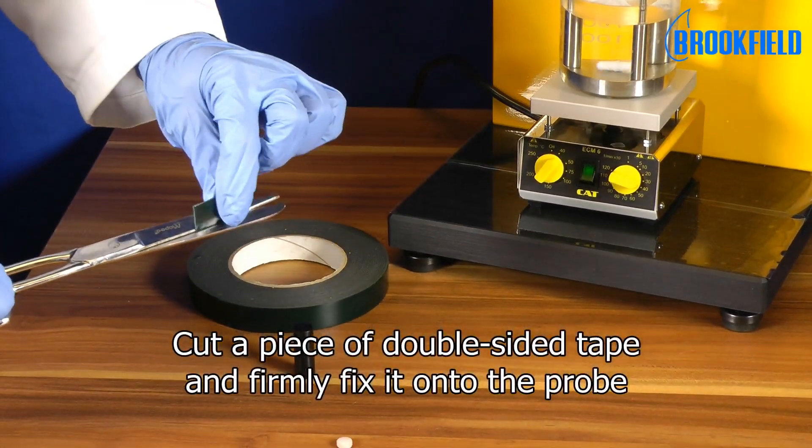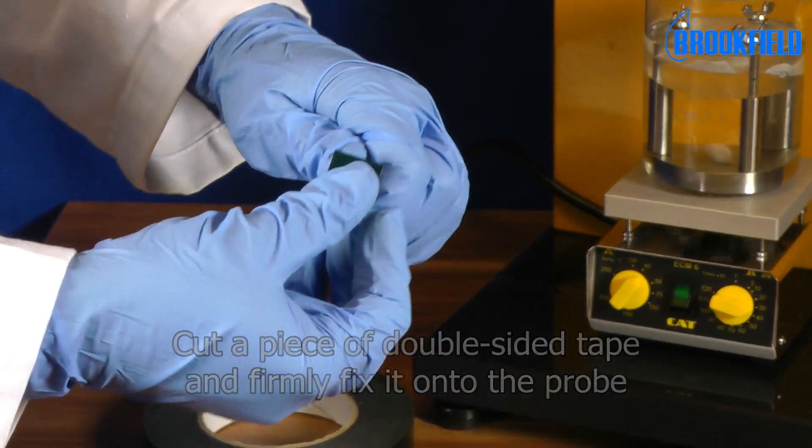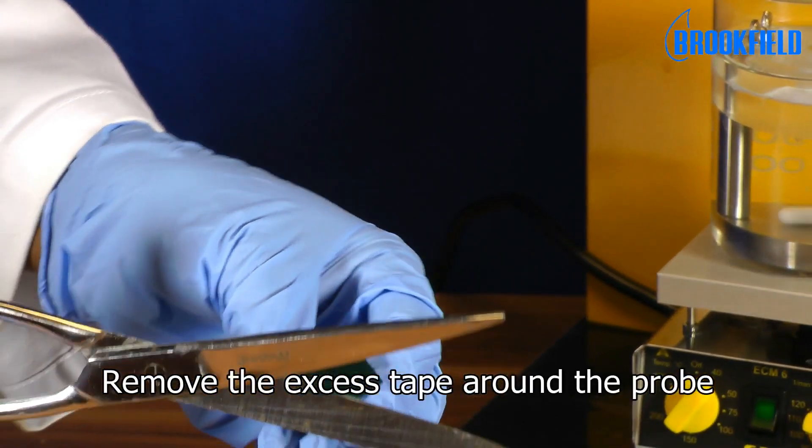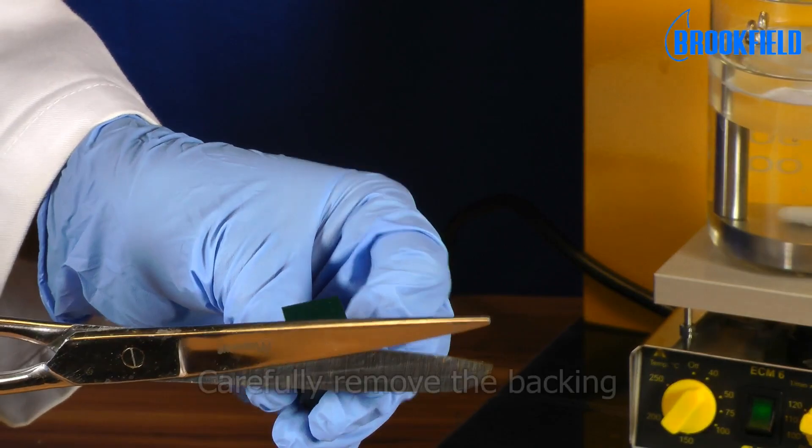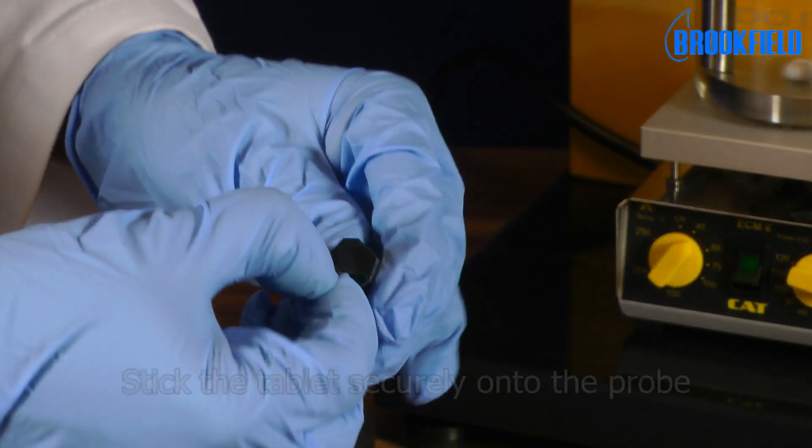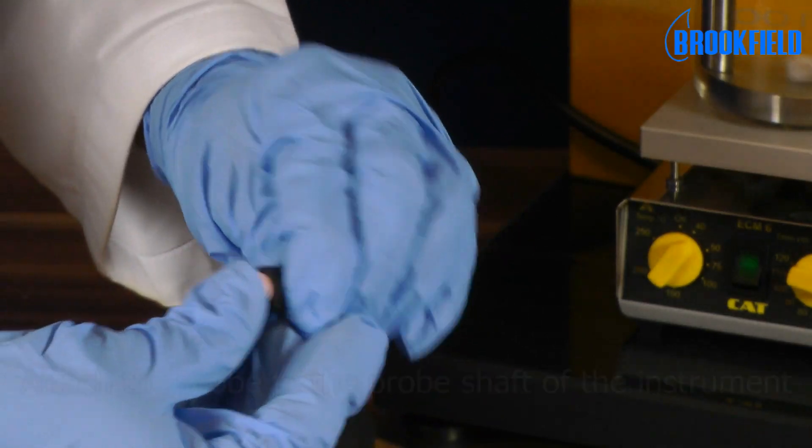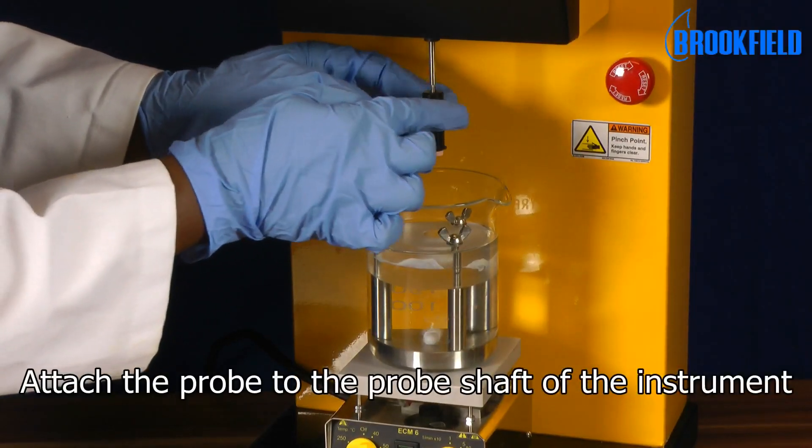Cut a piece of double-sided tape and firmly fix it onto the probe. Remove the excess tape around the probe and then carefully remove the backing. Stick the tablet securely onto the probe and then attach the probe to the probe shaft of the instrument.